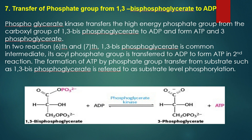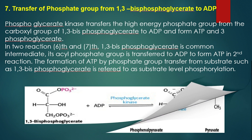Seventh reaction is the transfer of phosphate group from 1,3-bisphosphoglycerate to ADP. Phosphoglycerate kinase transfers the high-energy phosphate group from the carboxyl group of 1,3-bisphosphoglycerate to ADP and forms ATP and 3-phosphoglycerate. In this reaction, the phosphate group is transferred from the substrate 1,3-bisphosphoglycerate, so it is referred to as substrate-level phosphorylation.